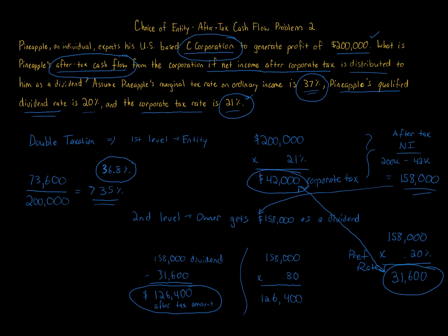Also, this analysis is just on distribution — you also have to think about the effects on liquidation. When we liquidate the corporation, there will be additional taxes that Pineapple will incur beyond what an S corporation or partnership LLC would incur. Keep all of that in mind when dealing with choice of entity. The answer to this question: the after-tax cash flow is $126,400. The total tax paid on $200,000 is $42,000 (corporate level) plus $31,600 (individual shareholder level) equals $73,600.